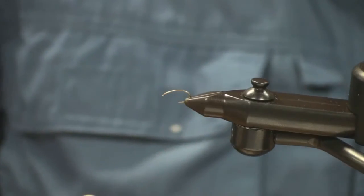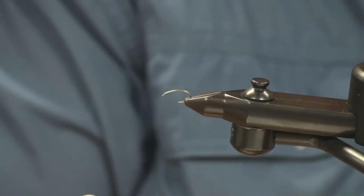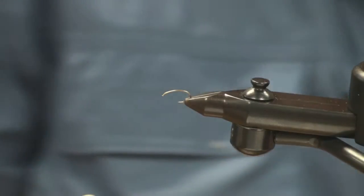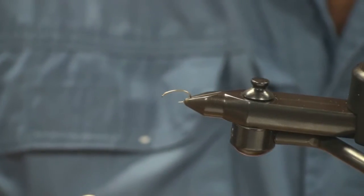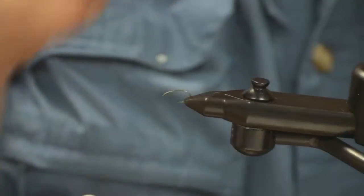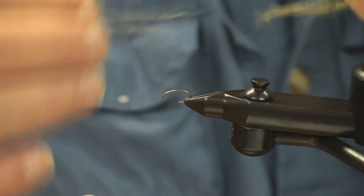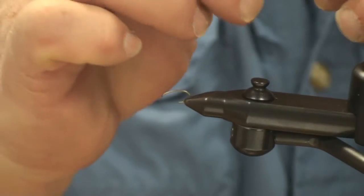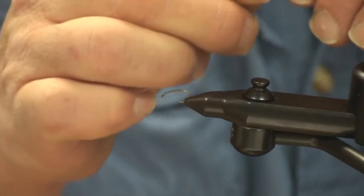Now what I tie on first here is a piece of Antron yarn. For a 14 or 16, just split the yarn in half. That's about all you need. This is for the claspers, which would be the tail on this fly.